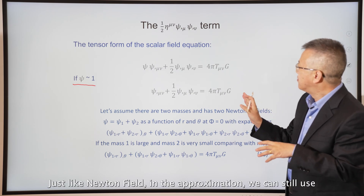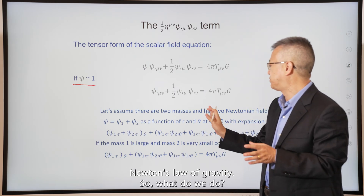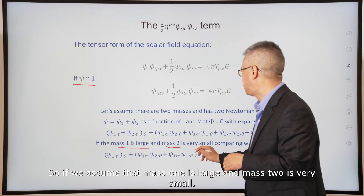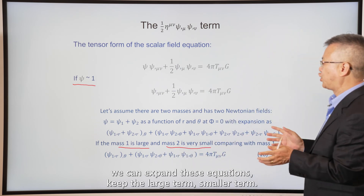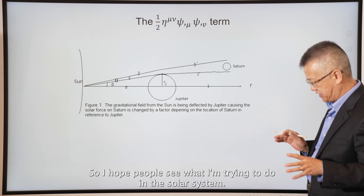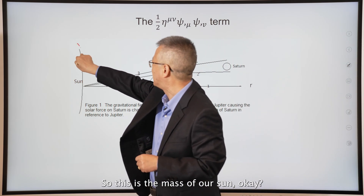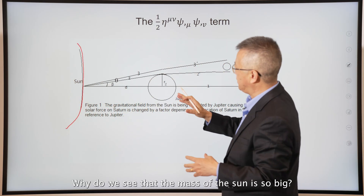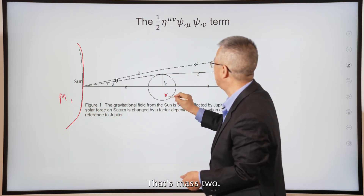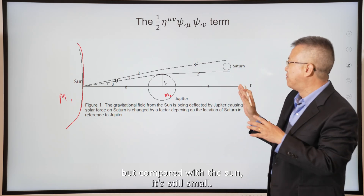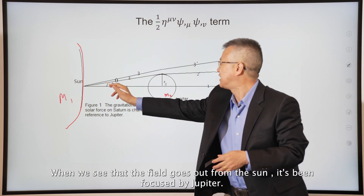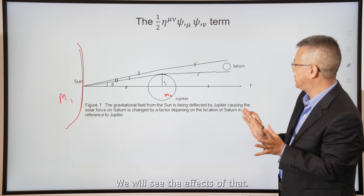Assuming two masses, as in Newton's field, in the approximation we can still use Newton's law of gravity. We do an expansion and compare terms. If mass one is large and mass two is very small — like the Sun and Jupiter — the field going out from the Sun gets focused by Jupiter, and we can see the effects of that.